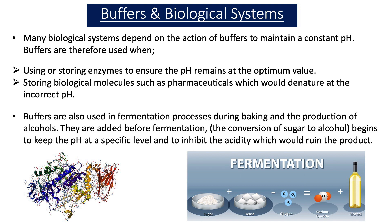Buffers are also used in many industrial processes, one of which is fermentation. Fermentation is a process where sugars are turned to alcohol and is used during baking and the production of alcohols. Buffers are added before fermentation — the conversion of sugar to alcohol — to keep the pH at a specific level and to inhibit the acidity that would ruin the product.